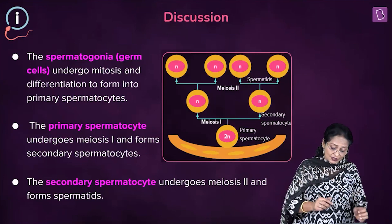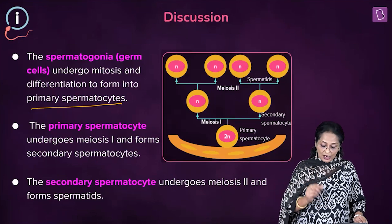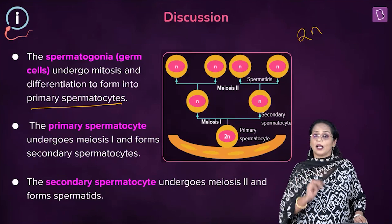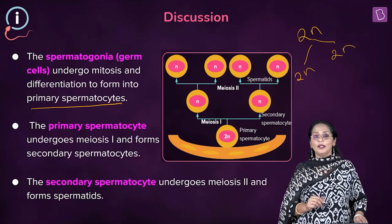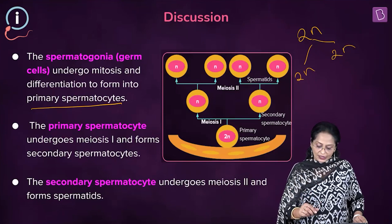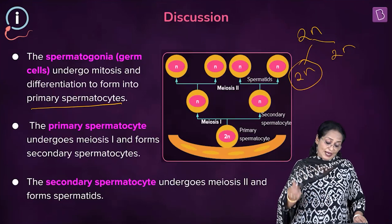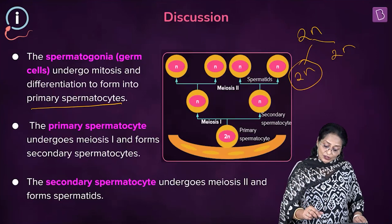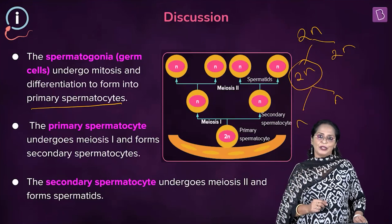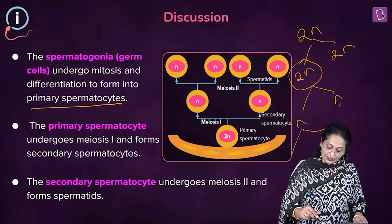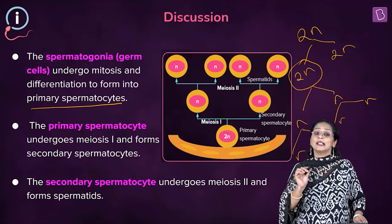The first step is that germ cells or spermatogonia undergo mitosis and start multiplying. Some cells differentiate to form primary spermatocytes. The spermatogonia are diploid, undergoing mitosis, so daughter cells are also diploid. The primary spermatocyte undergoes the first meiotic division to give rise to two haploid secondary spermatocytes, and the secondary spermatocyte undergoes meiosis 2 to form four haploid daughter cells called spermatids.